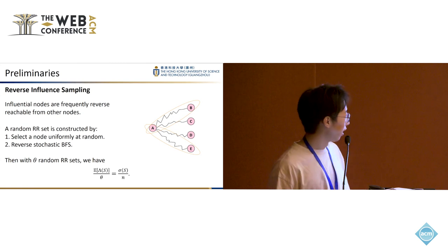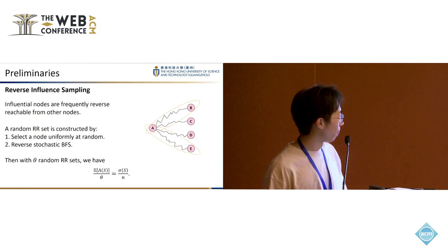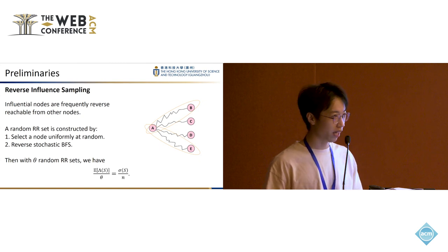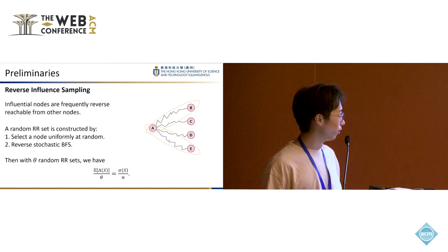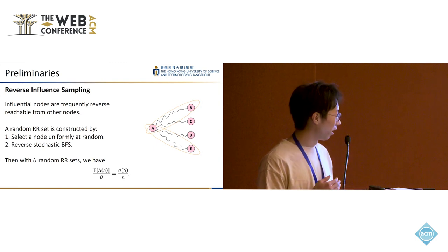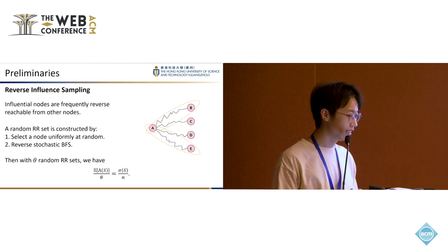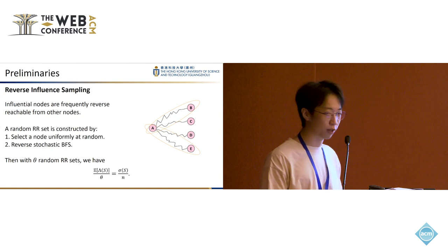With this idea, a random RR set is defined. RR set means reverse reachable set, defined as the nodes that will be activated in the reverse traversal process from a random node. Then by sampling a large number of RR sets, a well-established observation is that the fraction of RR sets that S appears in is actually the fraction of nodes that S will influence.